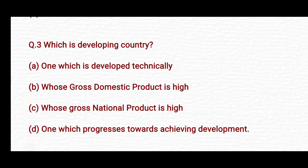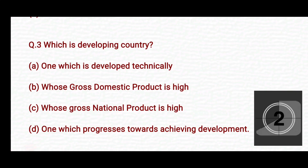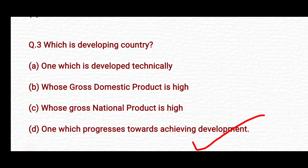Which is a developing country? Option A: one which is developed technically. Option B: whose gross domestic product is high. Option C: whose gross national product is high. Option D: one which progresses towards achieving development. The right answer is Option D — one which progresses towards achieving development.